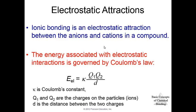Electrostatic attractions are really important in ionic bonding because an ionic bond is an electrostatic attraction between anions and cations. Anions are negatively charged, cations are positively charged. This energy associated with these interactions is governed by Coulomb's law. We're not going to actually do calculations with this, but it is helpful to really look at the equation. This energy is a form of potential energy, energy of position. This is Coulomb's constant, just a constant.